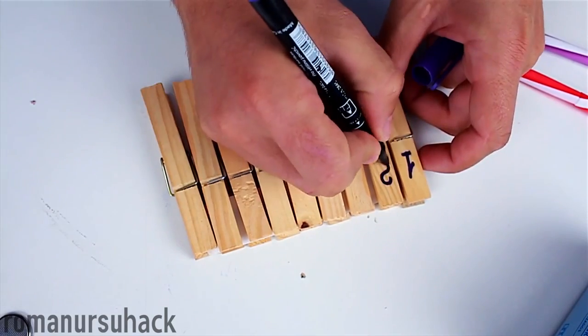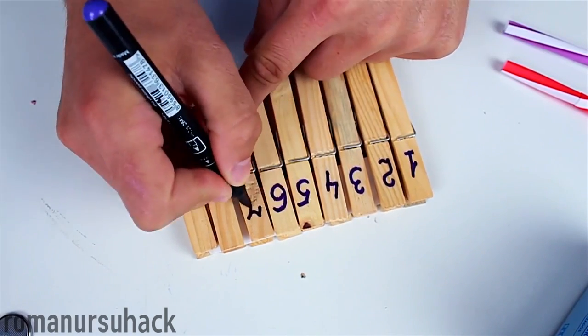We'll need 9 to 10 of them, a couple of ice cream sticks, and a highlighter for our first idea. First of all, we'll need to number all of the clothespins from 0 to 9.